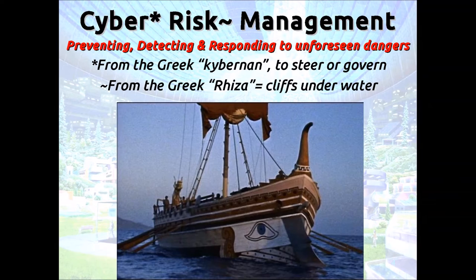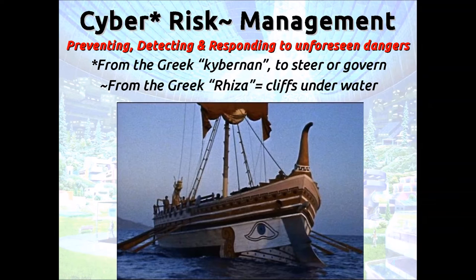When we talk about ways to handle a risk, we think of: avoid it — just don't do it; reduce it — I'm going to do it but carefully; transfer it — you do it; or accept it. Acceptance means I accept I can't prevent it, but it doesn't mean you won't detect and respond. That's what separates acceptance of a risk from negligence. Due diligence means to think before you act. Due care is to take action. If you can't prevent it, due care means you have ways to detect and respond — otherwise you're negligent.